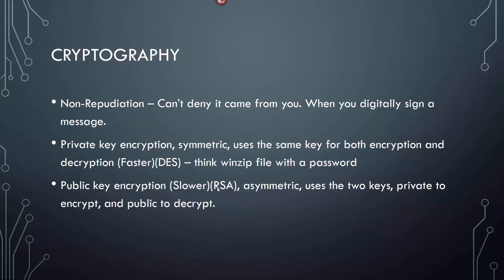Cryptography: non-repudiation is something you'll have to remember for the test. It basically means you can't deny it came from you when you digitally sign a message with your private key. A private key in encryption is symmetric — it uses the same key for both encryption and decryption, and it's faster than asymmetric. It uses DES and triple DES. Think WinZip file with a password — you put a password on it, mail it to someone, and call them with the password. That's private key symmetric encryption.